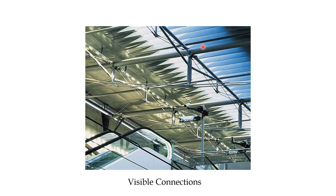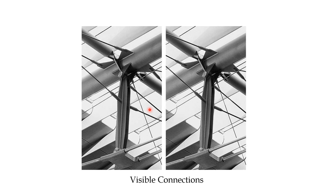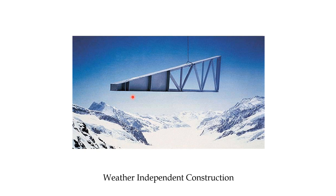Visible connections are another feature — here you can see the connections for elements with a zoomed picture of the connection detail. Weather-independent construction is another very important property of steel structures. In concrete construction in cold weather, we face many issues — concrete does not harden properly in sub-zero temperatures and does not gain its full strength. In steel structures, we can overcome these weather issues.